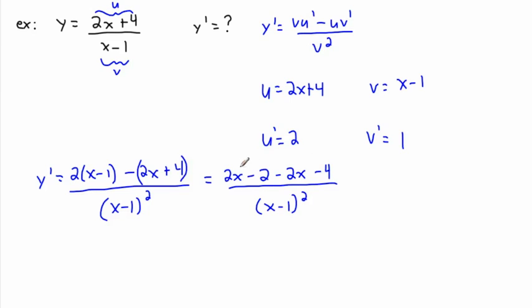I have minus 2 minus 4, so finally my answer is y prime equals negative 6 over x minus 1 squared. This will tell me my derivative or slope of my tangent line at any point.